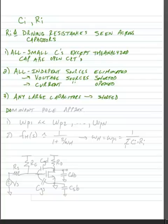We're going to make what we call a dominant pole approximation. What this means is we're going to say that one pole has a much lower frequency than any other pole in the circuit — so we might have an omega p1 that has a much lower frequency than omega p2, all the way up to some nth order pole, omega p_n.